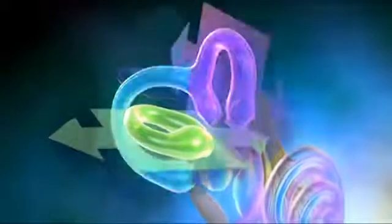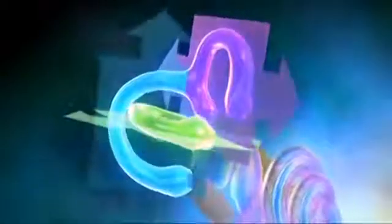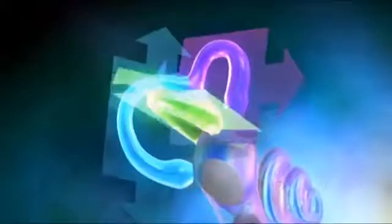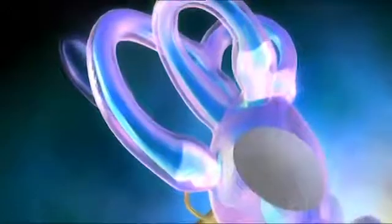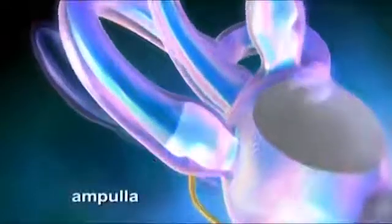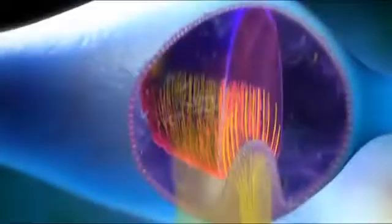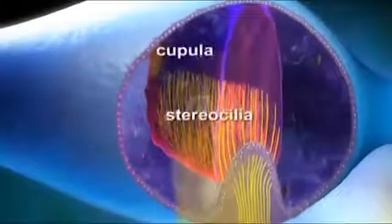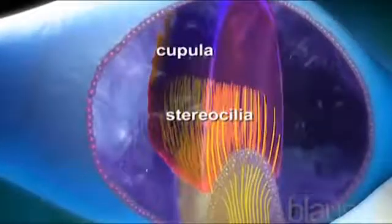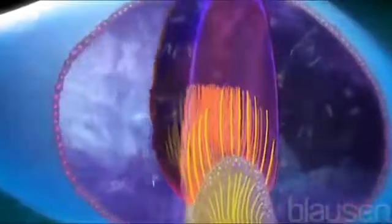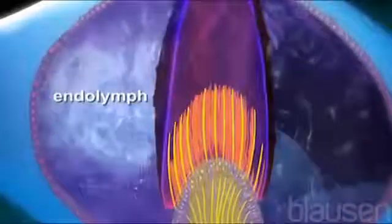Each canal contains a membranous semicircular duct where angular momentum is sensed. At the base of each duct is an expansion called the ampulla. Within the ampulla, long stereocilia of hair cells are embedded in the cupula, which sticks out into the endolymph. When your head moves, the endolymph moves the cupula and stimulates the stereocilia.